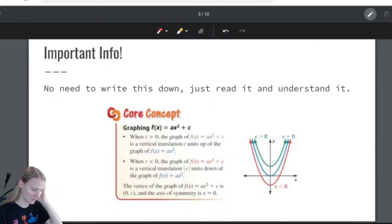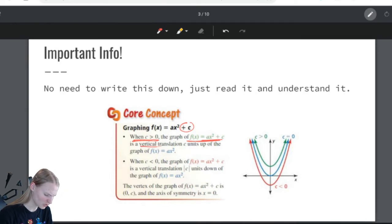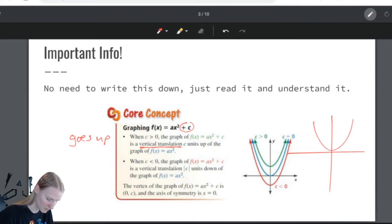Now, because all we're doing is tacking on the plus c, it's not so bad. So, important information. You don't need to write this down. You just need to understand it in your brain. When c is greater than 0, when this c is positive, the graph of f of x, ax squared plus c is a vertical translation c units up. Ooh, those are big words. Vertical translation, c units up. What that means is it goes up. So, instead of your graph being here, now your graph goes up. That's it.